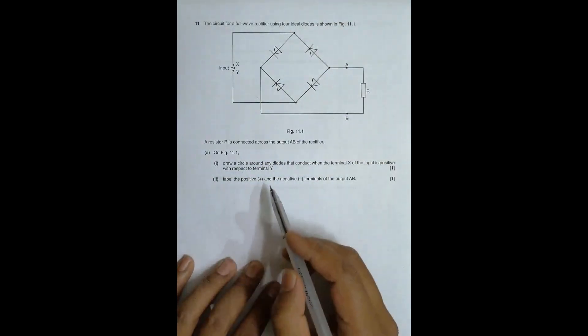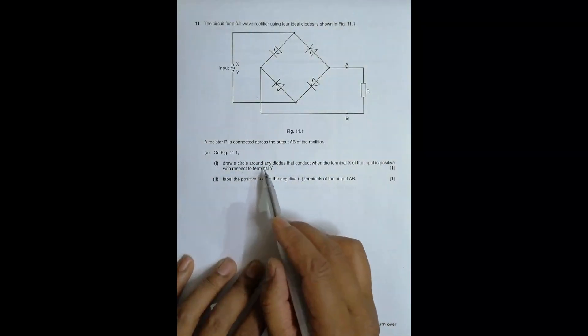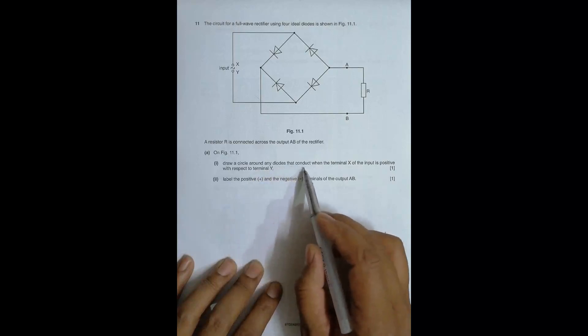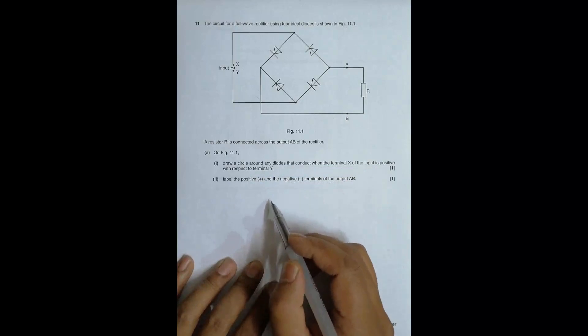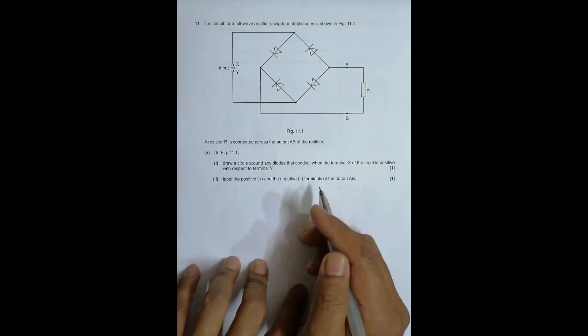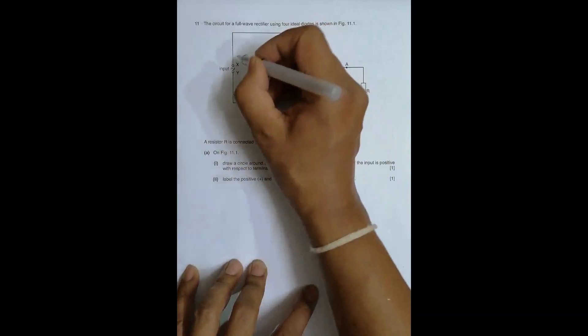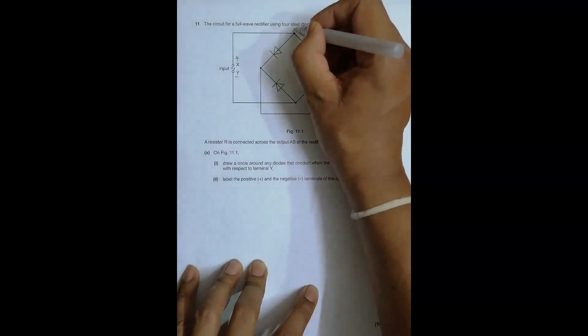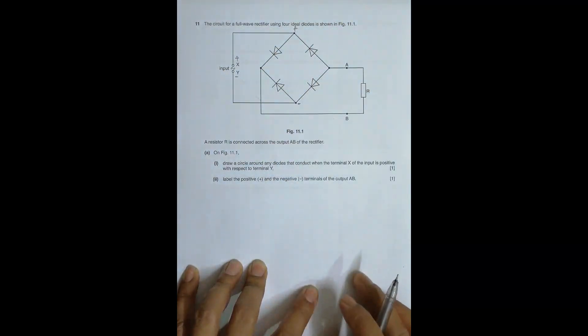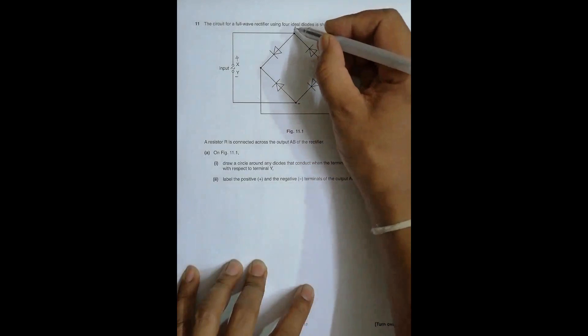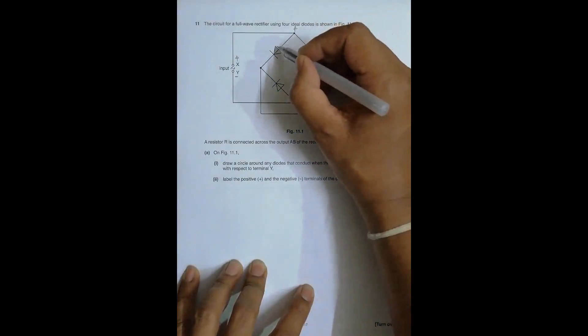The first question is on figure 11.1 draw a circle around any diodes that conduct when the terminal X of the input is positive with respect to the terminal Y. So when X is positive, this thing becomes positive, this thing will be negative. This positive means that this is P side of the diode connected to positive. This will be zero.